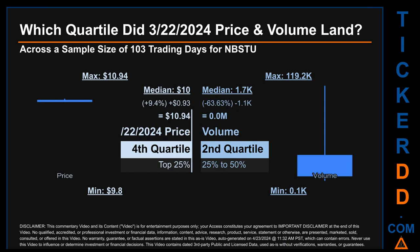Hello, my name is Maria. Which quartile did March 22nd, 2024 price and volume land in, across a sample size of 103 trading days? The maximum end-of-day price for NBSTU was $10.94, while the minimum was $9.80. Within that price range, March 22nd, 2024's price of $10.94 landed within the fourth quartile, meaning that it was within the top 25 percent of all sampled end-of-day prices.